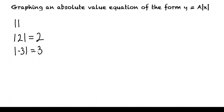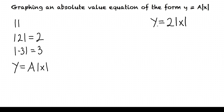But what happens when we have an absolute value function of the form y equals a times the absolute value of x, and we want to graph it? Consider the example y equals 2 times the absolute value of x. This is of the form y equals a times the absolute value of x where a equals 2. Let's make a table and plot some points to see what this looks like.